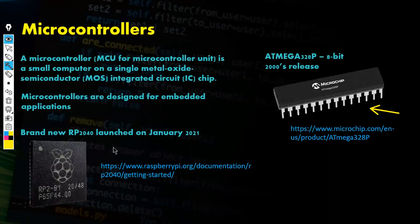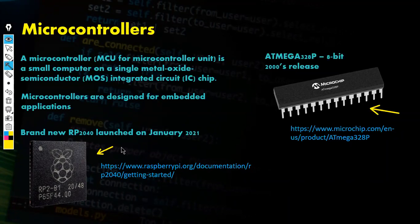Here we can see the RP2040 — a brand new microcontroller from the Raspberry Pi Foundation, released in January 2021. It can be set up to use MicroPython, CircuitPython, and even C and C++.